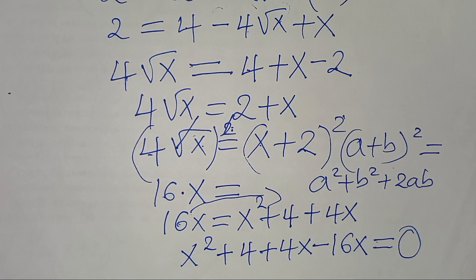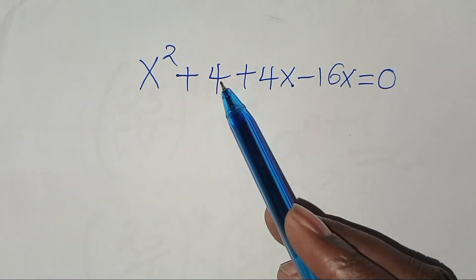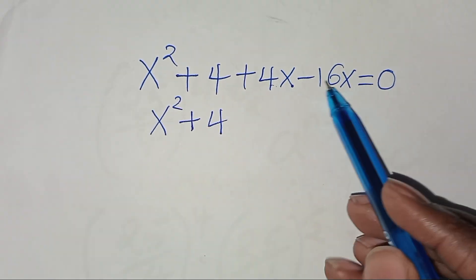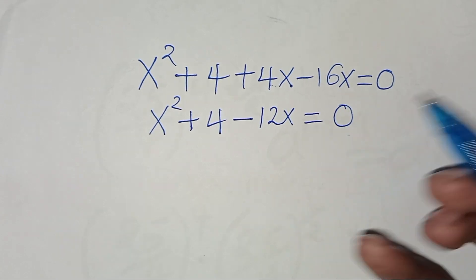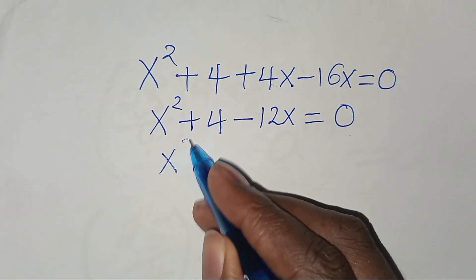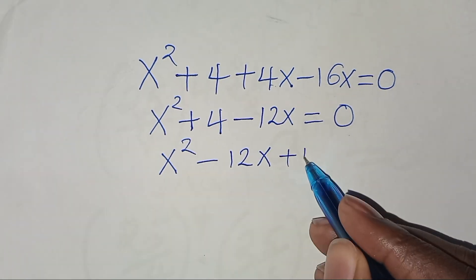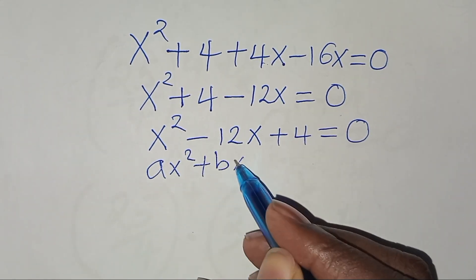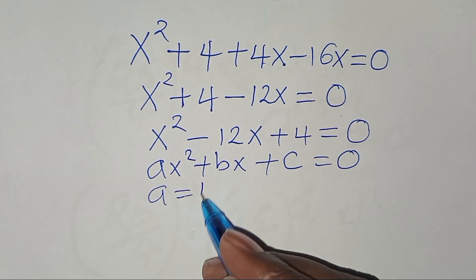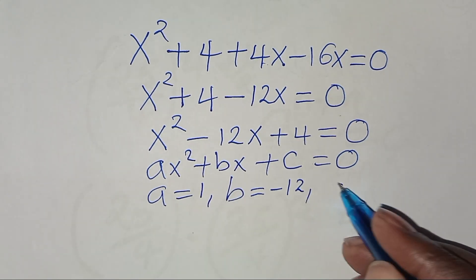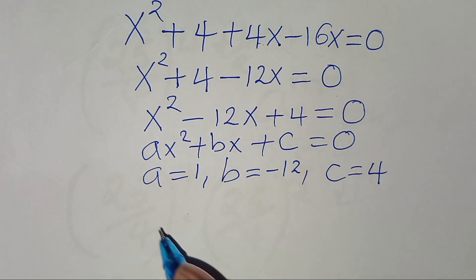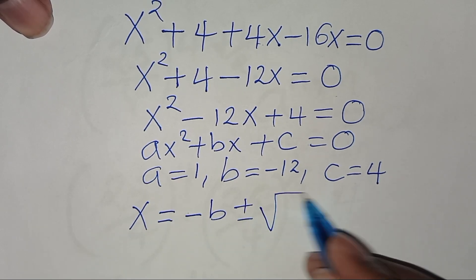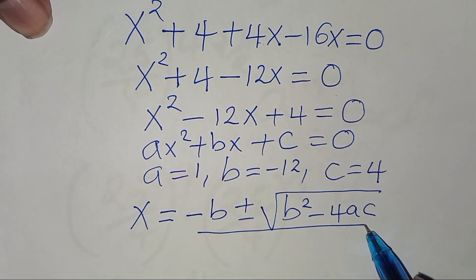Simplifying, 4x − 16x = −12x, so we have the quadratic equation x² − 12x + 4 = 0. This is in the form ax² + bx + c = 0 with a = 1, b = −12, and c = 4. We'll solve using the quadratic formula: x = (−b ± √(b² − 4ac)) / 2a.